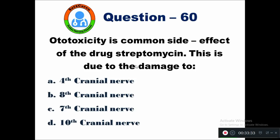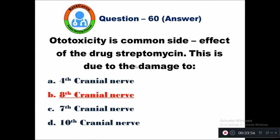Question 60: Ototoxicity is a common side effect of streptomycin. This is due to damage to — option A fourth cranial nerve, B eighth cranial nerve, C seventh cranial nerve, D tenth cranial nerve. Ototoxicity due to streptomycin is caused by damage to the eighth cranial nerve — the vestibulocochlear nerve.